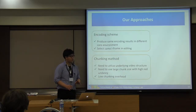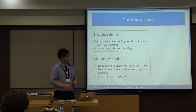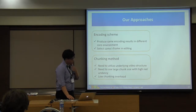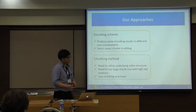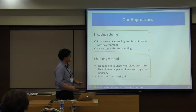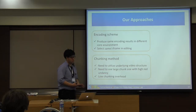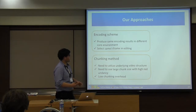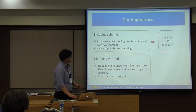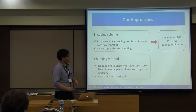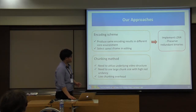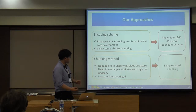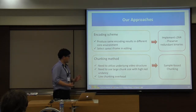From the previous analysis, we can learn what we should consider for effective content-based caching for video content. For the encoding scheme, in order to give more chances to reduce redundant binaries, we should produce the same encoding result for the same input in different core environments, and also write the same I-frame or keyframe positions in the metadata. To solve these issues, we designed C264, which can preserve redundant binaries. For the chunking method, it needs to utilize the video structure, use a large chunk size with high redundancy, and have low chunking overhead. So we proposed sample-based chunking.